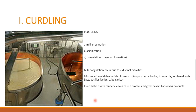The bacteria used include Streptococcus lactis, Streptococcus cremoris incubated at about 37 degrees centigrade, combined with Lactobacillus lactis and Lactobacillus bulgaricus. Incubation with rennet cleaves the casein protein and gives casein hydrolysis products — that is, the coagulum. After curdling, the next step is separation of the curd from the liquid whey.